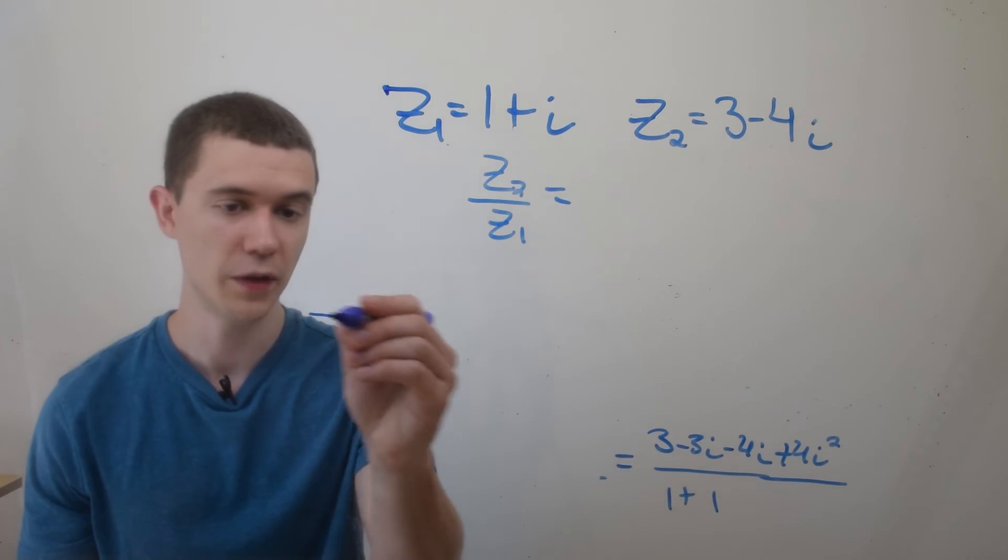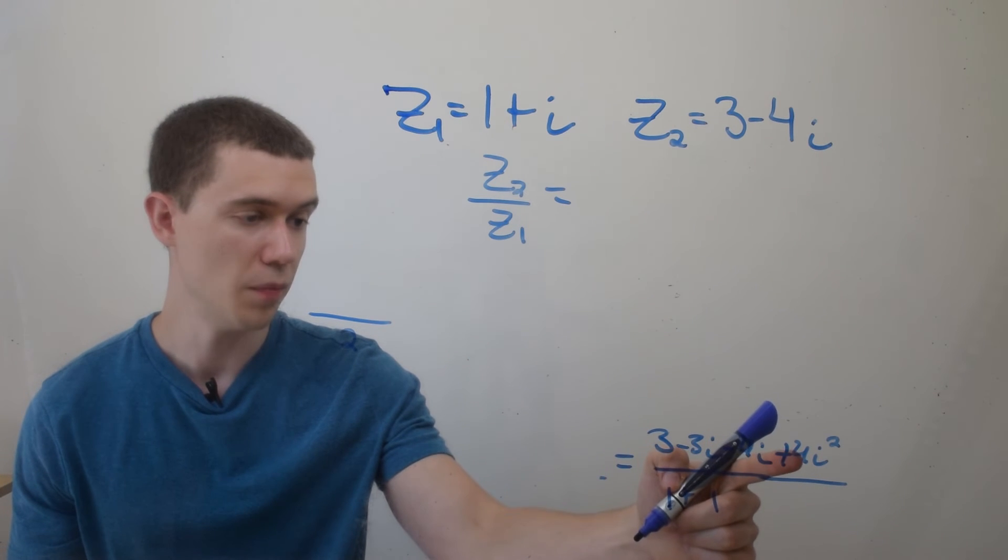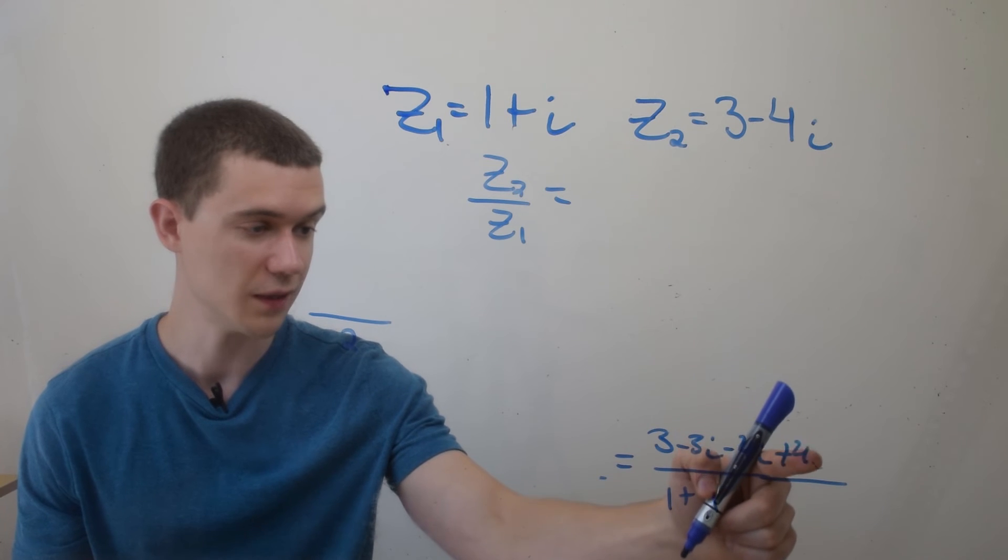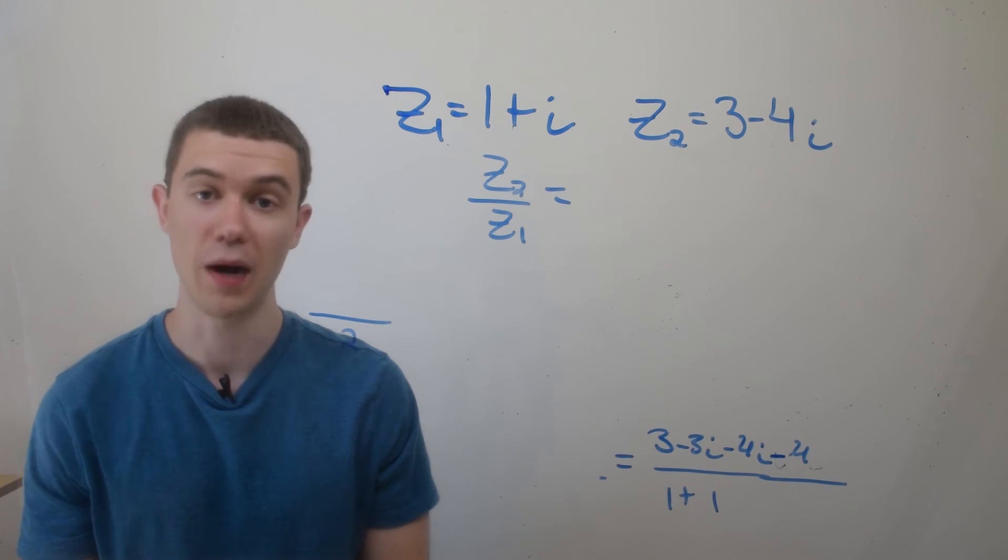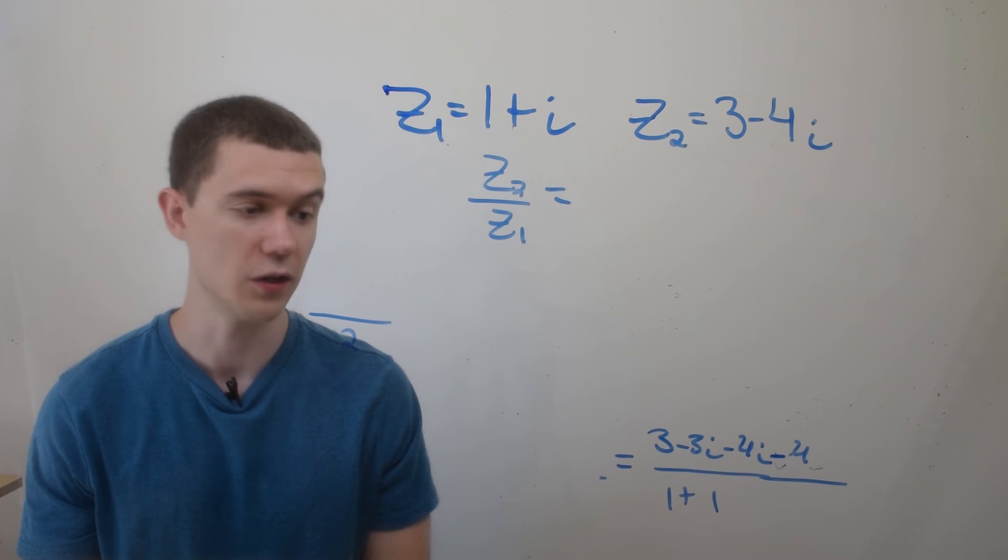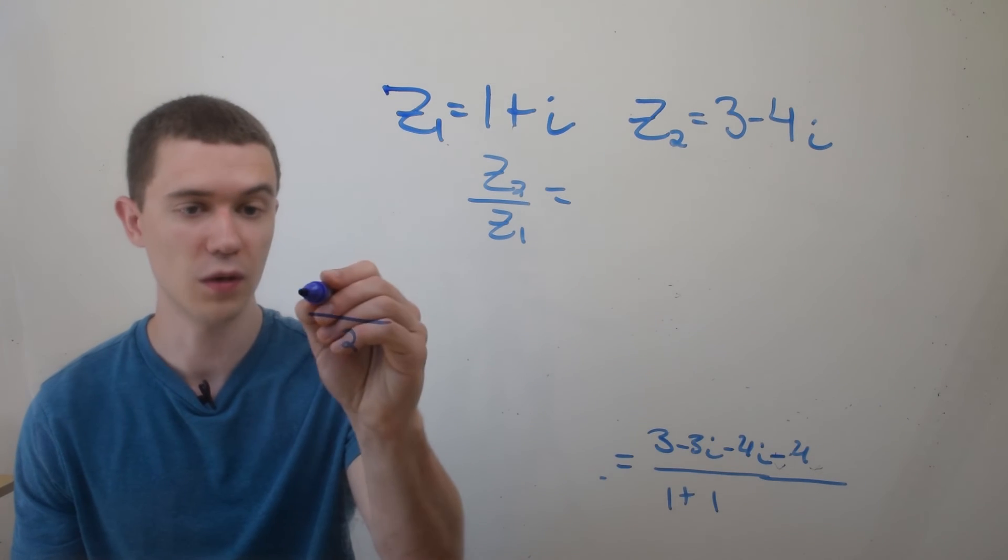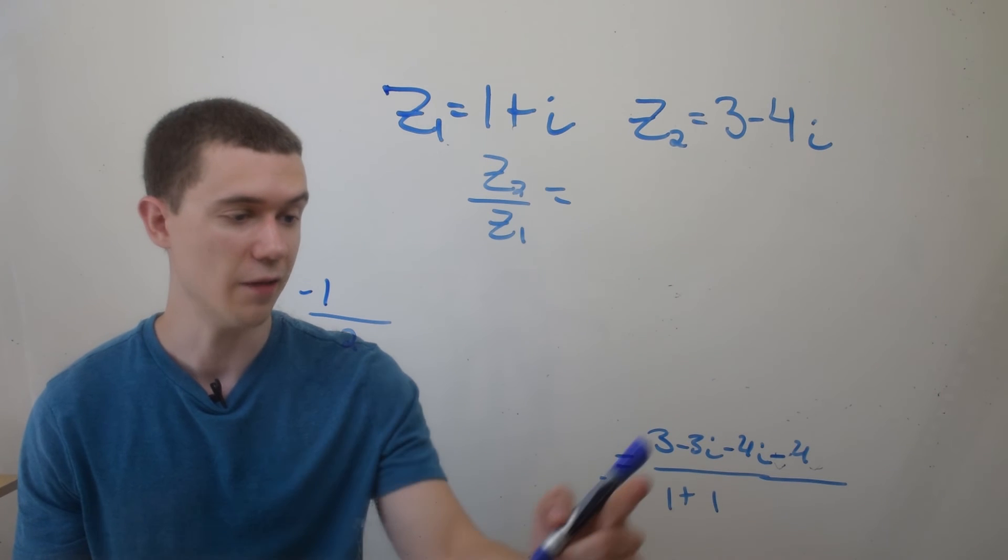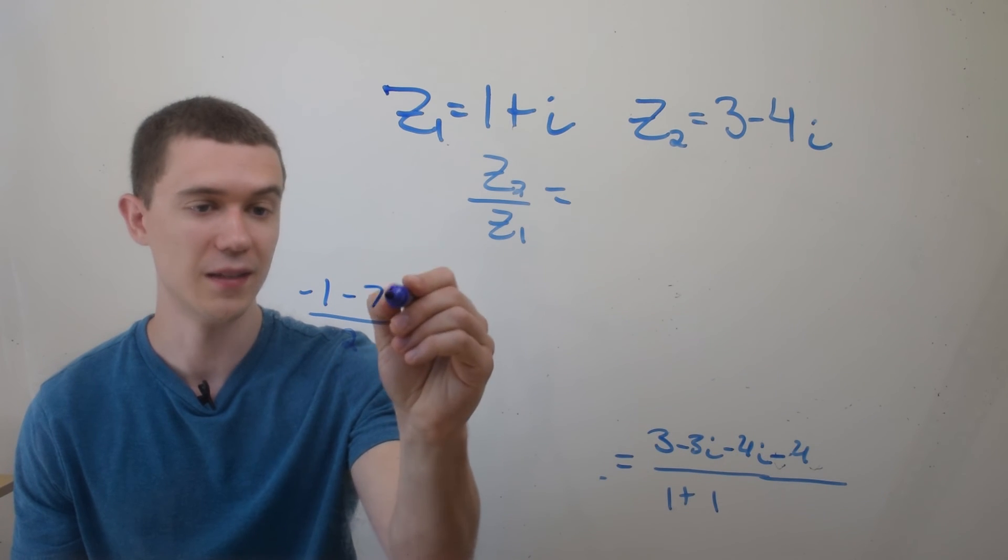So on the bottom, that's really nice. That's 1 plus 1 is 2. On the top, remember that i squared is negative 1. So I'll just replace this plus 4i squared with minus 4, and I can just combine the real terms and the imaginary terms. So as far as the real terms go, I've got 3 minus 4 is negative 1, and I have minus 3i minus 4i. That makes minus 7i.